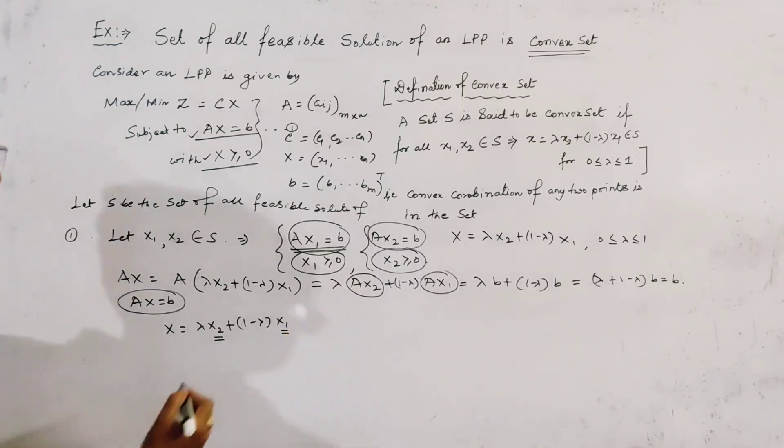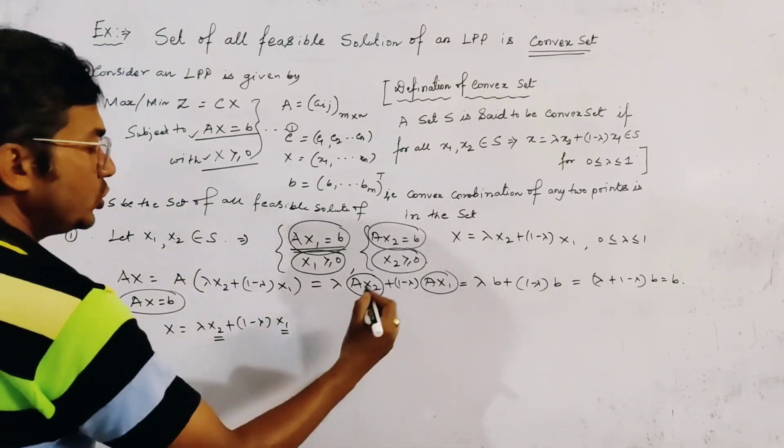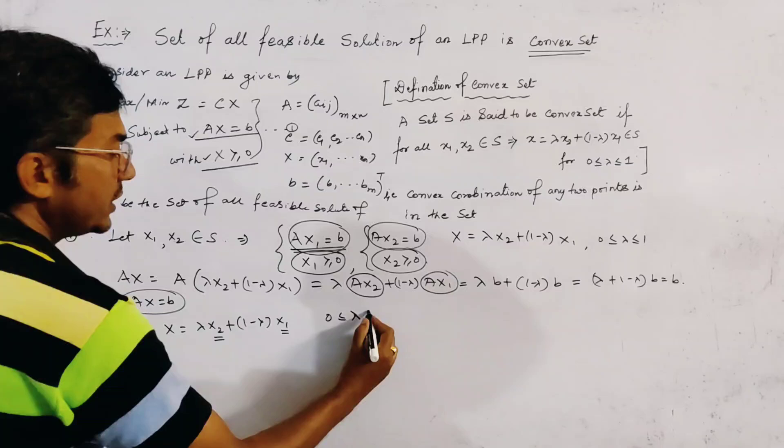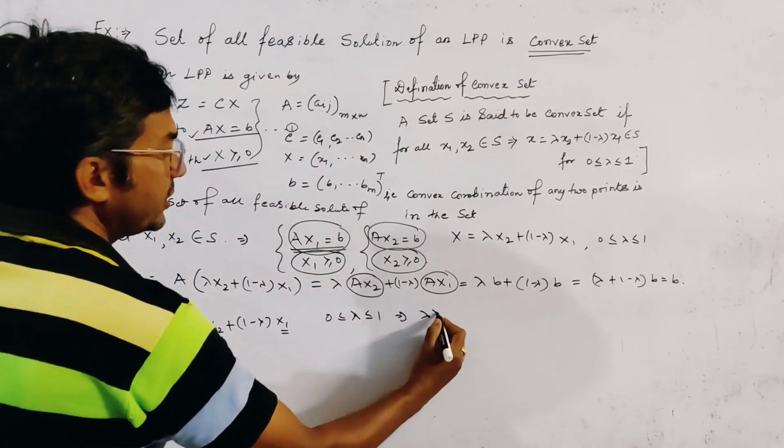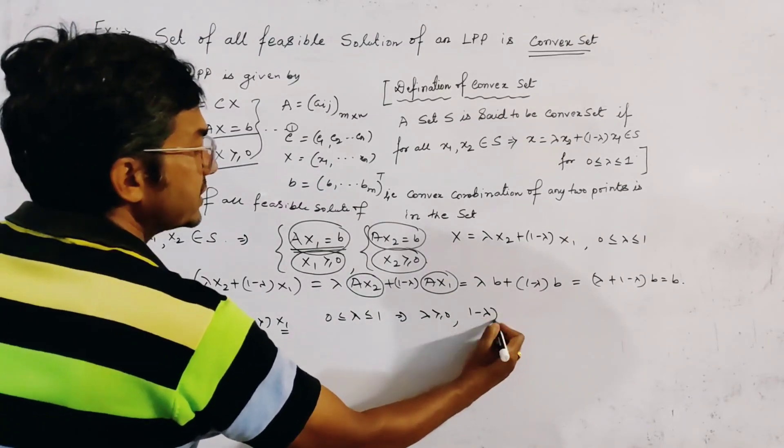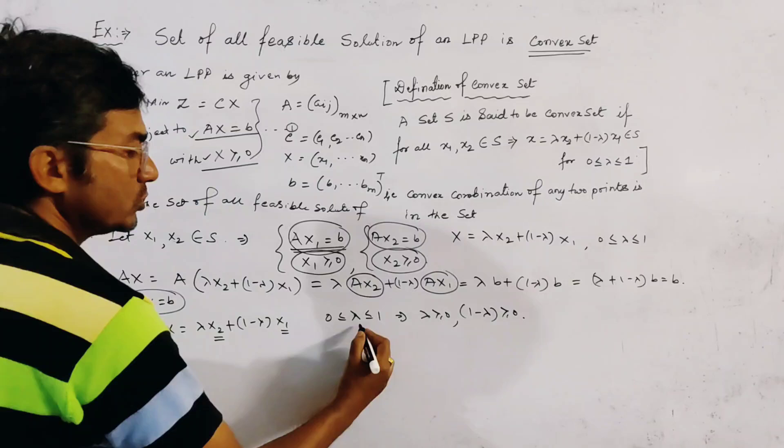So, these two are, equal to 0. Also, we know that, 0, less equal to lambda, less equal to 1. So, lambda, equal to 0, and 1 minus lambda, is obviously equal to 0, from this condition.